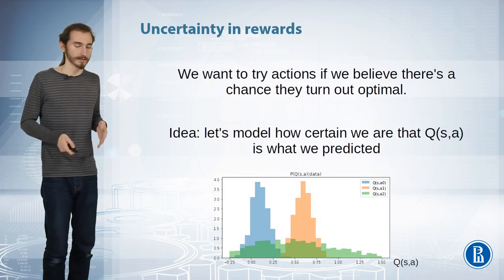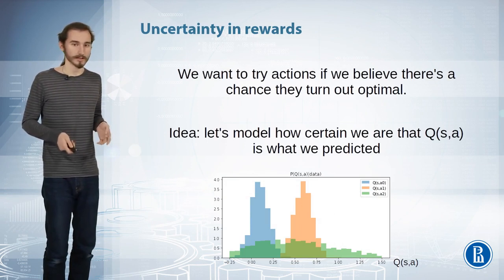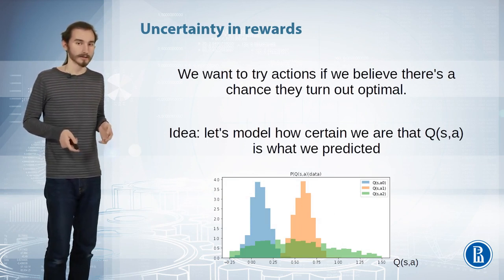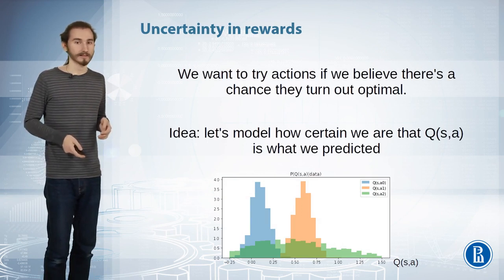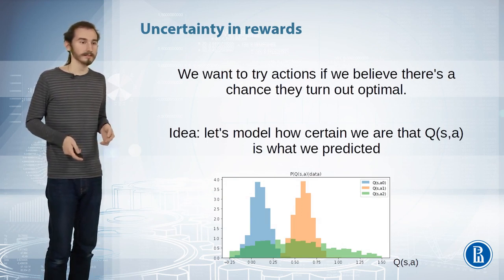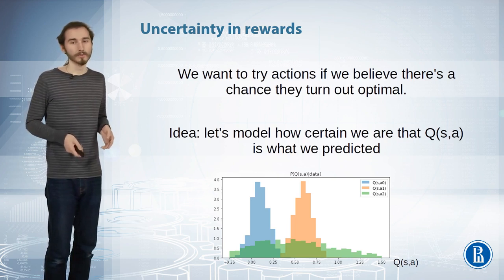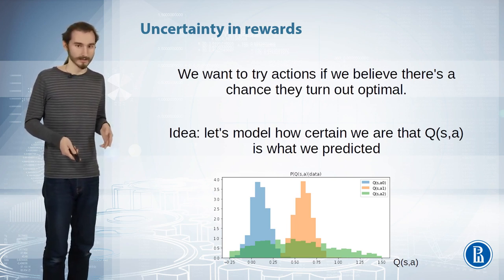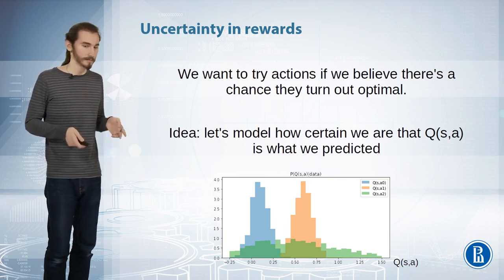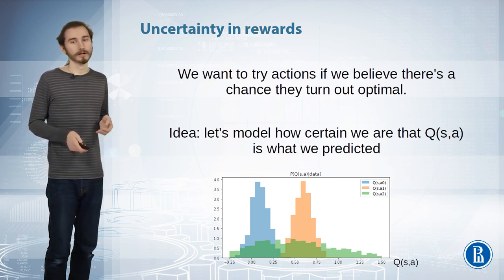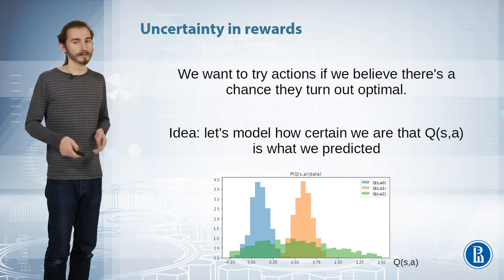So we want to prioritize actions that are uncertain, whose outcomes are not yet well known to us. To actually implement this in any practical algorithm, we won't just require the Q-values themselves. We want the probability of the Q-value in its Bayesian sense — basically our belief, expressed as a probability, that the Q-value is going to turn out to be this or that number.